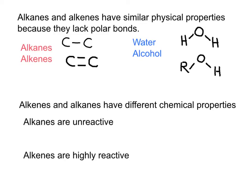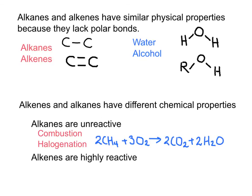Even though these two families contain the same types of atoms — carbon and hydrogen — the nature of these families in terms of reactivity is quite different. The family of alkanes is unreactive. In the chapter of alkanes, we only look at the reaction of oxidation, or combustion, and the reaction of halogenation. All organic compounds can burn, so the reaction of combustion of alkanes is not limited to this kind of substance. In this reaction, the carbons get oxidized to produce carbon dioxide, water, and energy or heat.